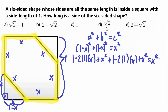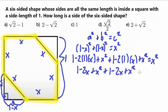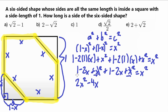Simplifying: 1 minus 2x plus x squared becomes 1 minus 2x plus x squared. Now collecting like terms from both sides: we have two x squared terms giving 2x squared, two negative 2x terms giving negative 4x, and two constant terms giving plus 2. So we have 2x squared minus 4x plus 2 equals x squared.